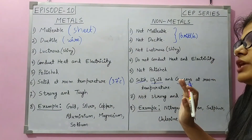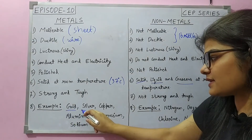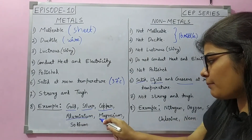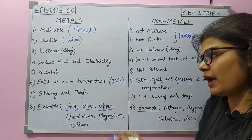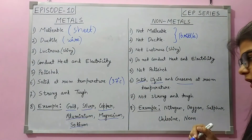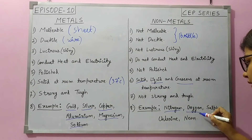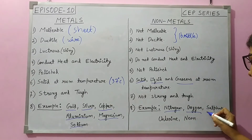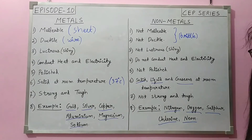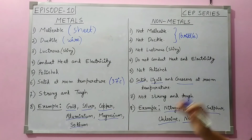Now we can see some examples. Metals include gold, silver, copper, aluminum, magnesium, and sodium. Non-metal examples include nitrogen in gaseous form, oxygen in gaseous form, sulfur as a gas, chlorine as a gas, and neon. We can observe and compare various metals and non-metals around us.